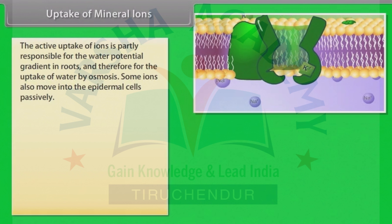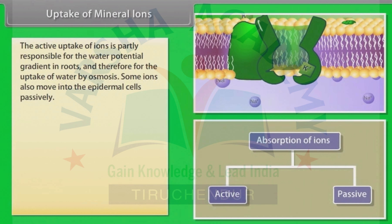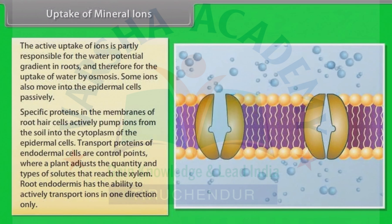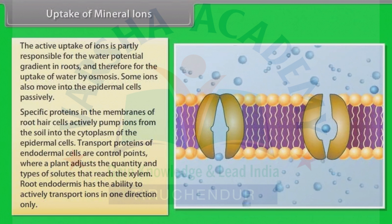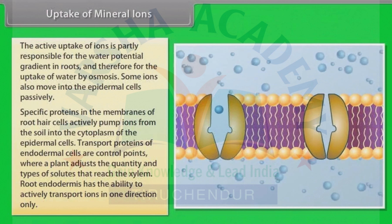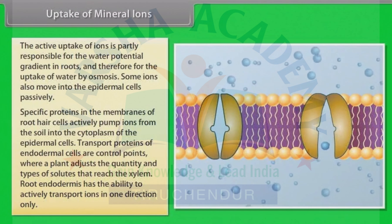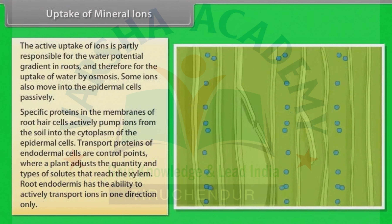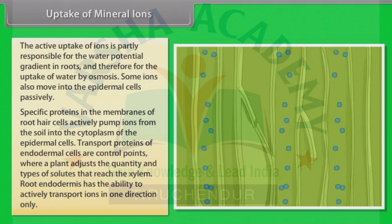The active uptake of ions is partly responsible for the water potential gradient in roots, and therefore for the uptake of water by osmosis. Some ions also move into the epidermal cells passively. Ions are absorbed from the soil by both passive and active transport. Specific proteins in the membranes of root hair cells actively pump ions from the soil into the cytoplasm of the epidermal cells. Like all cells, the endodermal cells have many transport proteins embedded in their plasma membrane. They let some solutes cross the membrane, but not others. Transport proteins of endodermal cells are control points where a plant adjusts the quantity and types of solutes that reach the xylem.